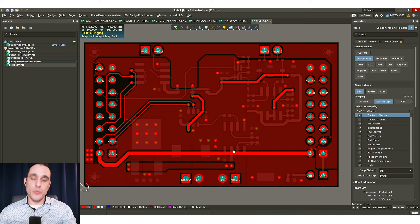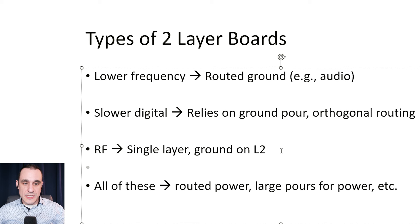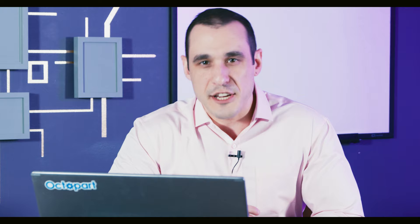We've looked at several examples of different kinds of two-layer boards implementing common practices for ensuring low noise, low interference, proper power handling, and defined ground. The only one we didn't cover was an RF example with single layer routing and ground on layer two — I'll reserve that for an upcoming video. What PCB design topics do you want us to cover? Leave your requests in the comments. Hit that subscribe button, hit that like button, leave your comments and questions — and don't forget to call your two-layer PCB fabricator, folks. See you next time.